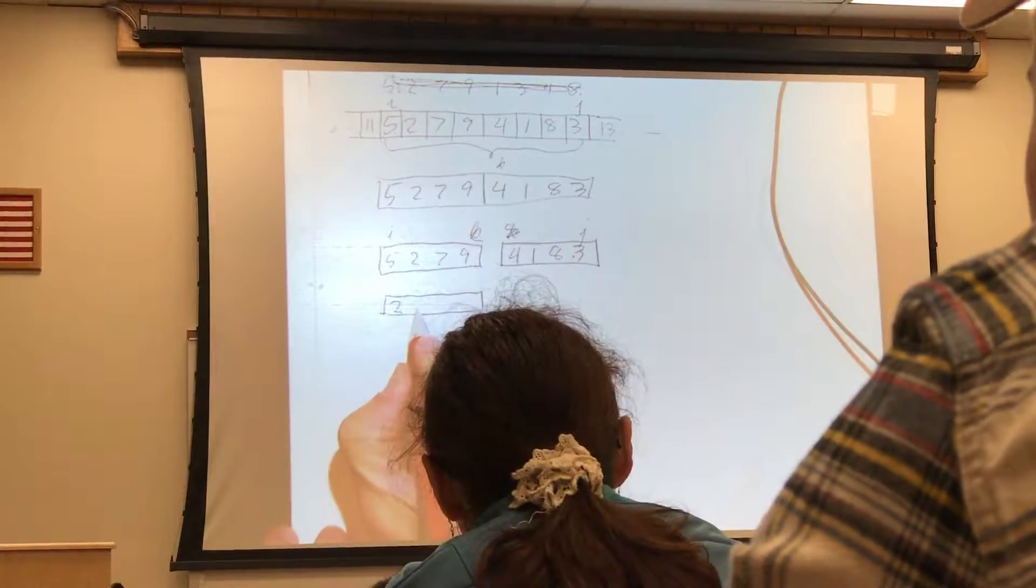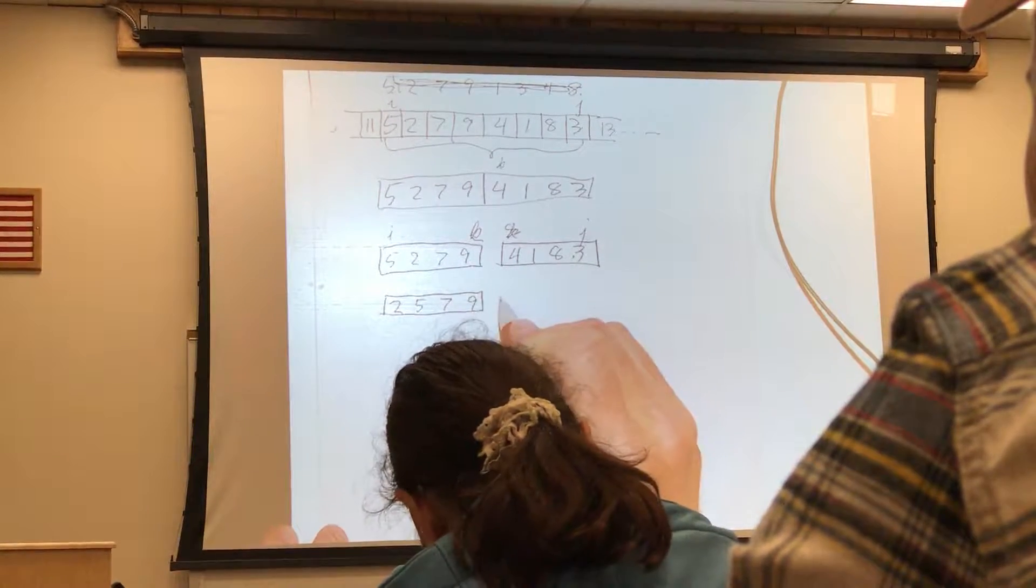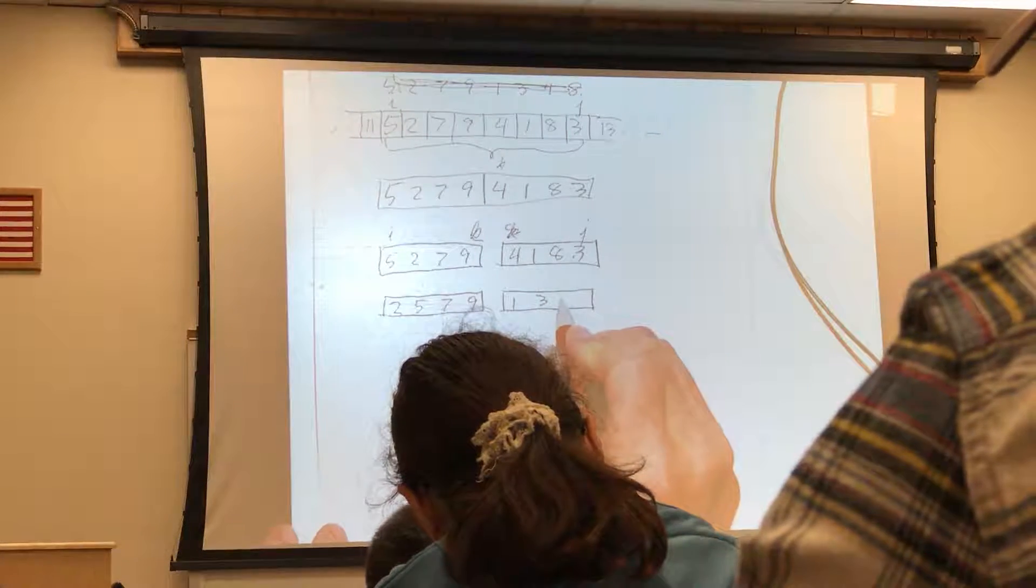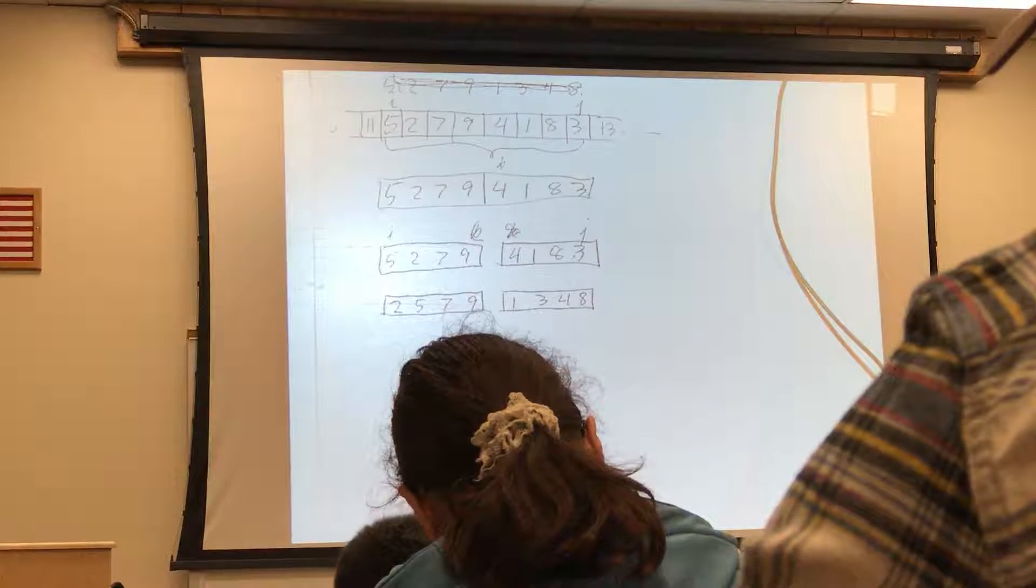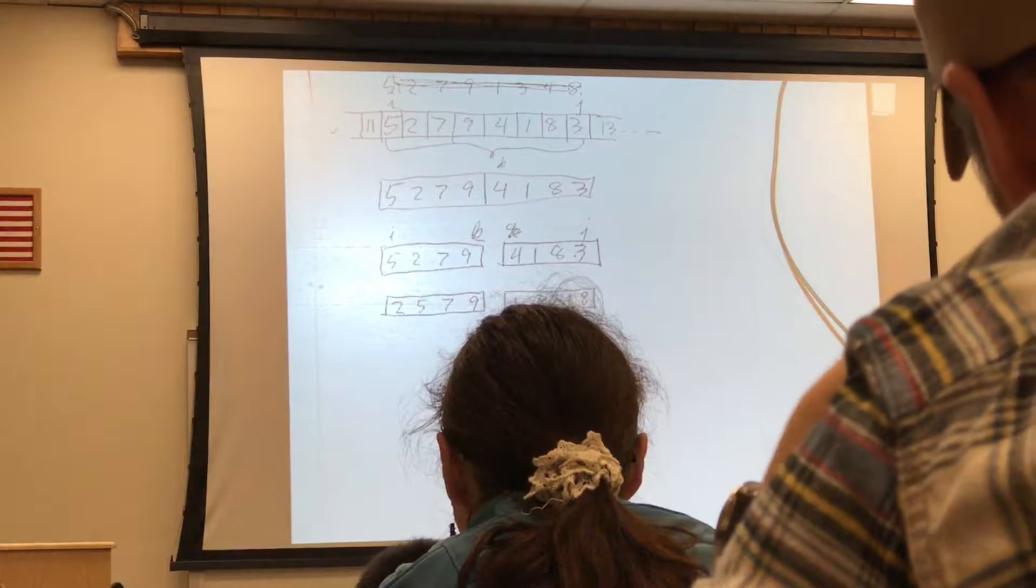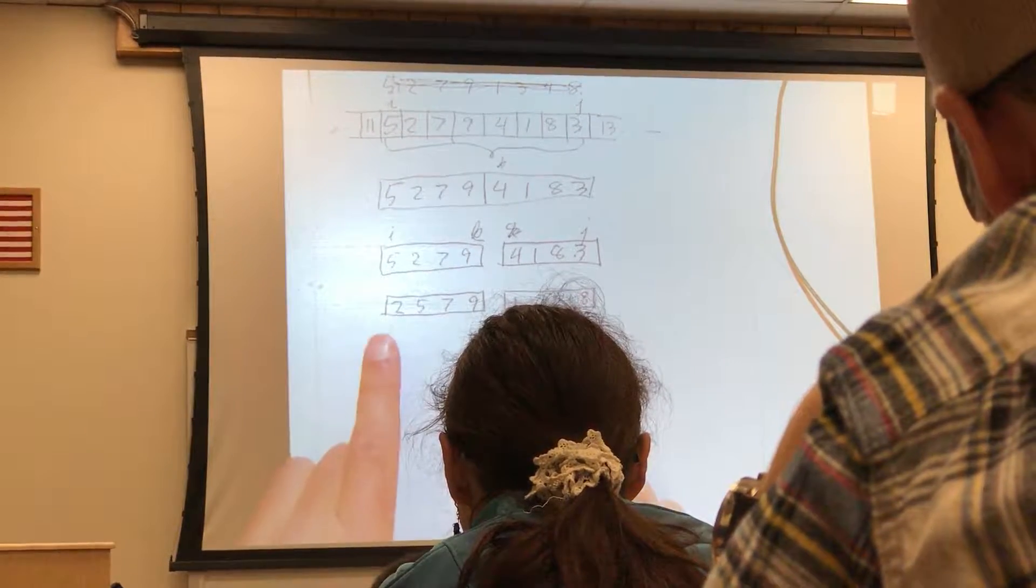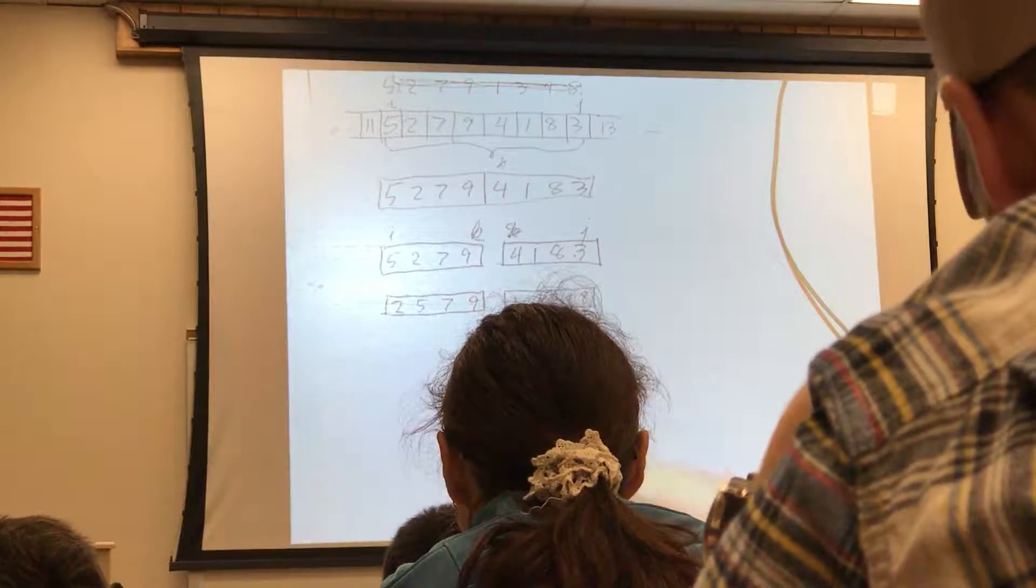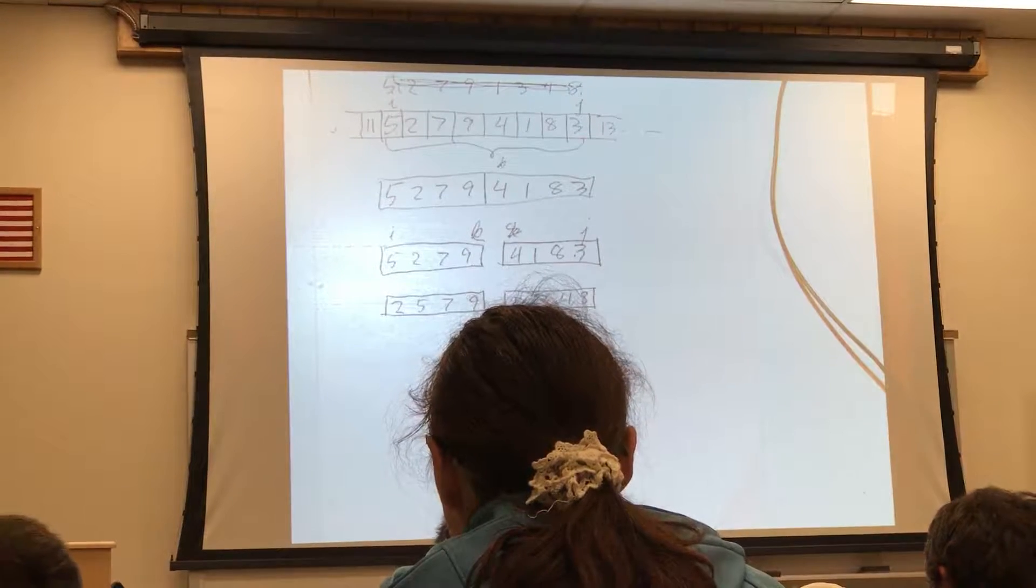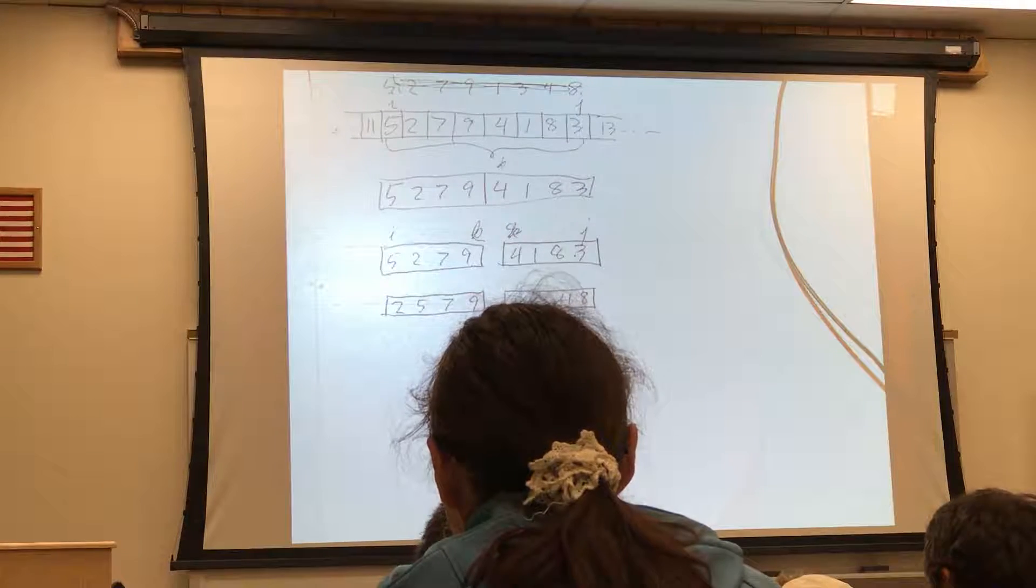So this thing comes back 2, 5, 7, 9. And this one comes back 1, 3, 4, 8. We still don't have everything between I and J sorted. But this is an easier problem. To collate two sorted lists into their sorted order, this is much easier than just taking two scrambled lists and trying to get them into sorted order.